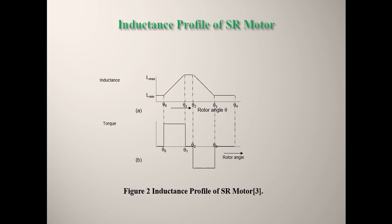The inductance profile for the SR motor is given in figure number two. We see that there is L_minimum and L_maximum. Inductance maximum occurs when both poles are exactly on the same axis — exactly opposite each other. Torque is positive when inductance is increasing and torque is negative when inductance is decreasing. This is the inductance profile of the motor.